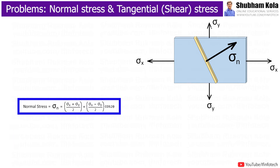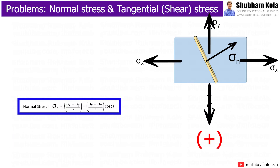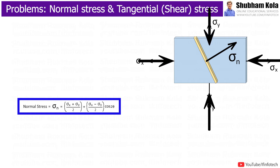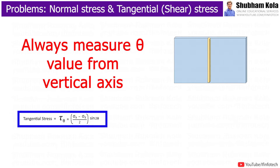The sign convention for putting values of stresses: tensile stress is positive, and if the stress is compressive — meaning the arrow is towards the body — then we use a negative sign. For the theta value, we always measure theta from the vertical axis.